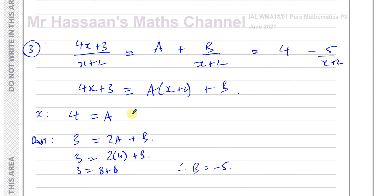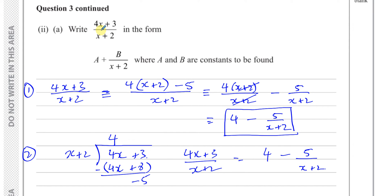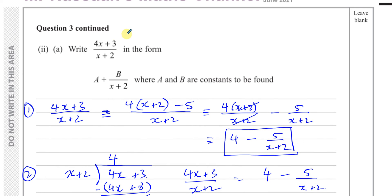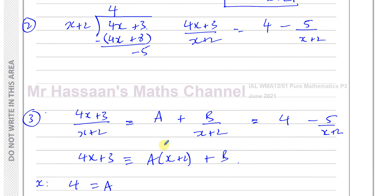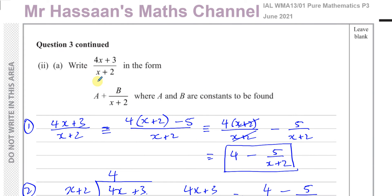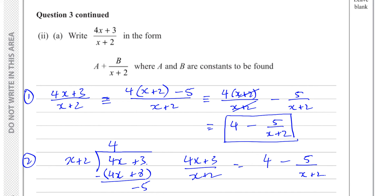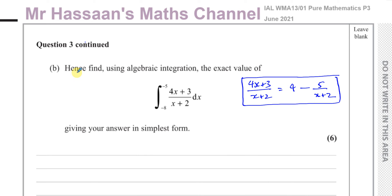All three methods are perfectly valid. I personally prefer the first method for something simple like this, but the long division method is most commonly used for more complicated cases. This leads us to part b, which says 'hence' — meaning using what we just found — find by algebraic integration the exact value of the integral of (4x+3)/(x+2) between the limits of minus 8 and minus 5.